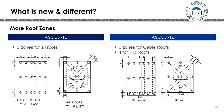In the previous version, there were three zones for all roofs: Zone 1 being the middle field portion of the roof, Zone 2 being the perimeters, and Zone 3 for the corners. That applied to both gable roofs and hip roofs.